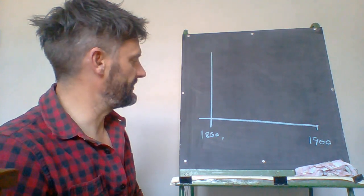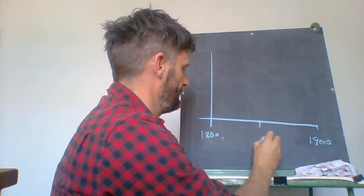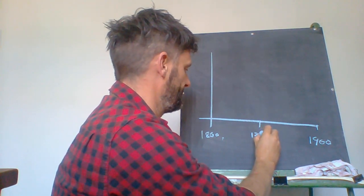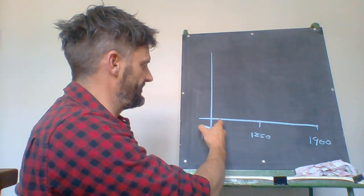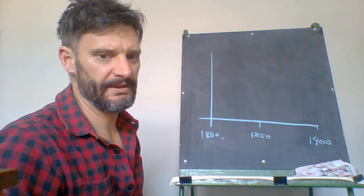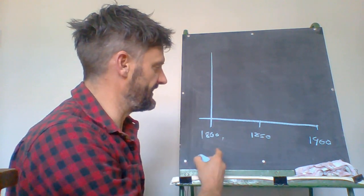Now I know that's 100 years so I know that in between the two there is 1850. Then I just need to break it down nice and evenly into four points through here so I have 1810 through 1840.